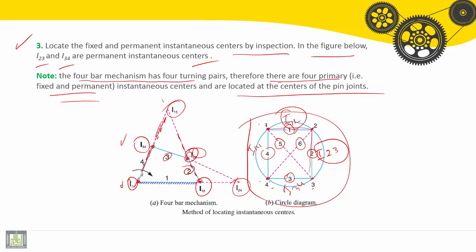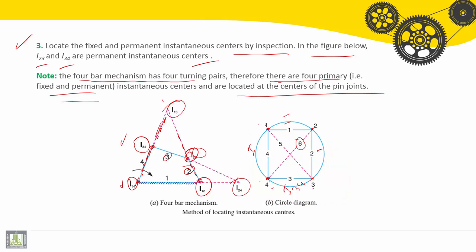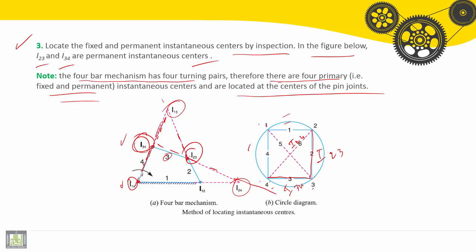By the same way, how to find i(2,4)? Number six is i(2,4). To find it, we go through i(2,3) and i(3,4) and draw that line. Similarly, we draw the line through i(1,2) and i(1,4). The intersection of these two lines gives us i(2,4).